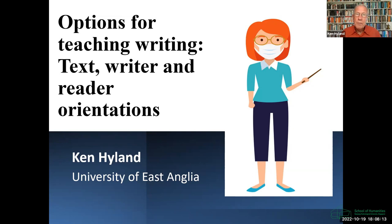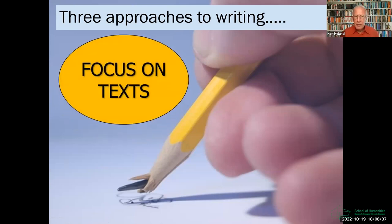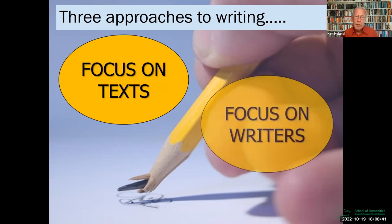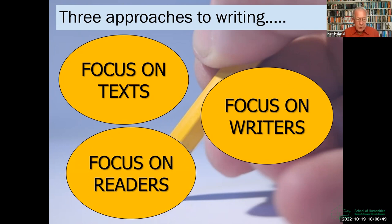You're going to be familiar with some of this, but I hope it raises issues for you and helps you to reflect on what it is you do in your own classroom. Each focus assumes a different idea about writing and implies different teaching methods. The first approach concentrates on the products of writing by examining texts. The second focuses on the writer and the processes used to create texts. And the third approach emphasizes the role that readers play in writing, showing how writers think about an audience in creating texts. This is all very broad, but I think it's a useful way of discussing and evaluating some of the research and how it feeds into classrooms.